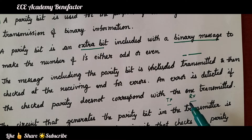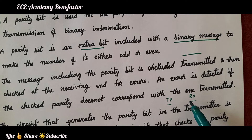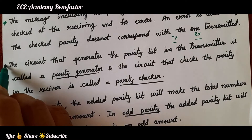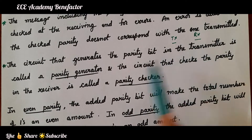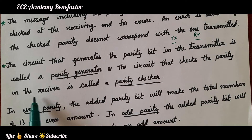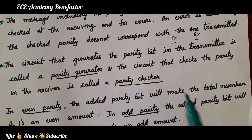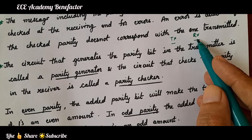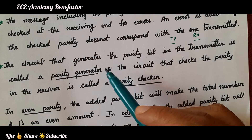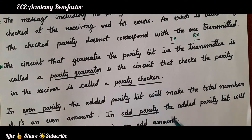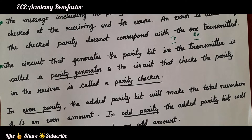The parity bit is used for detecting errors during data transmission of binary information. The circuit that generates the parity bit in the transmitter is called a parity generator, and the circuit that checks the parity in the receiver is called the parity checker. The parity generator generates the parity bit; the parity checker verifies whether the received message is error free or not.